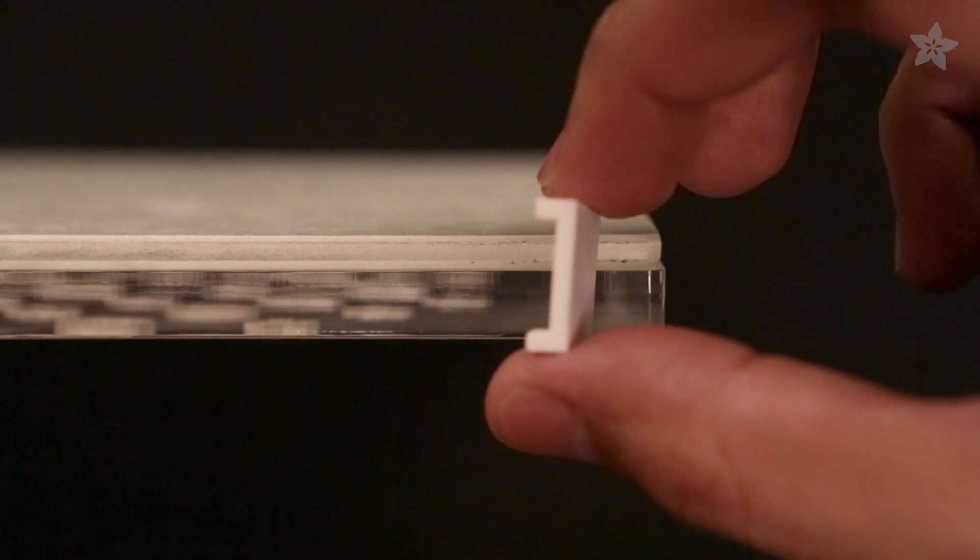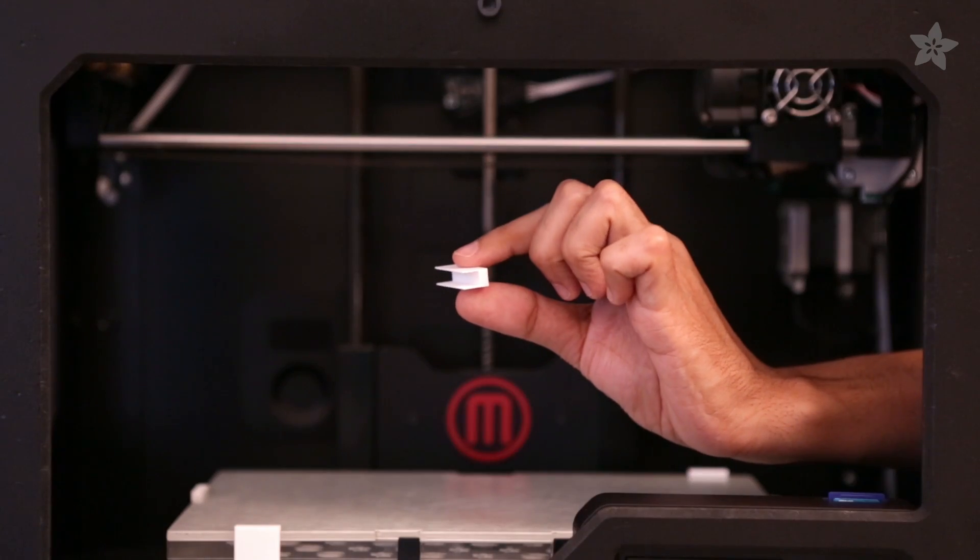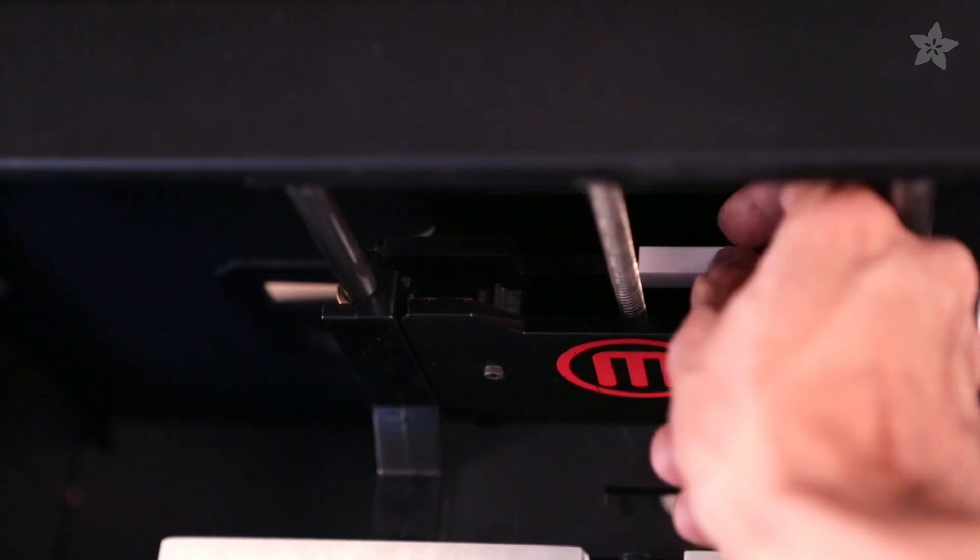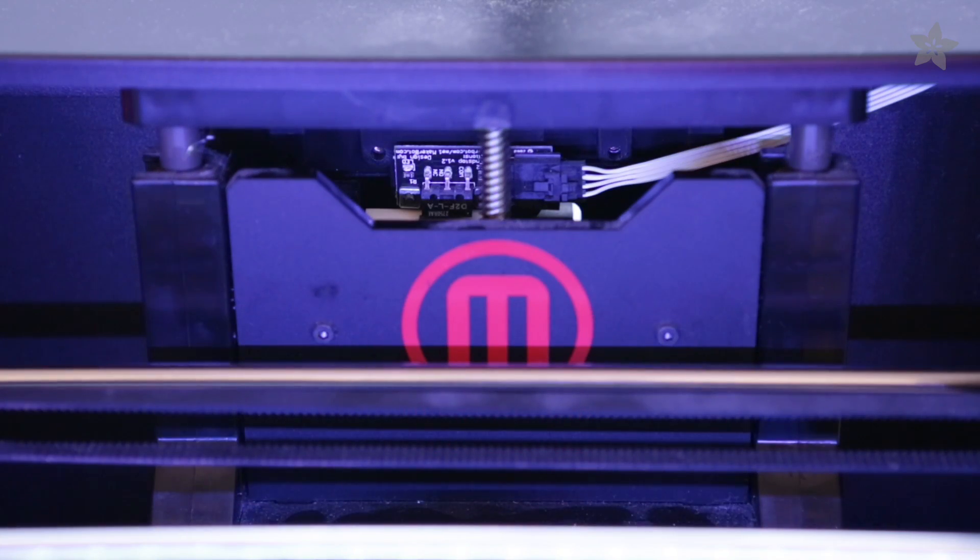These 3D printed clips keep the plate attached. Just make sure they don't get in the way of your extruder. A 3D printed spacer part will mount onto the printer to adjust the y-axis to compensate for the thickness of the ninja plate.